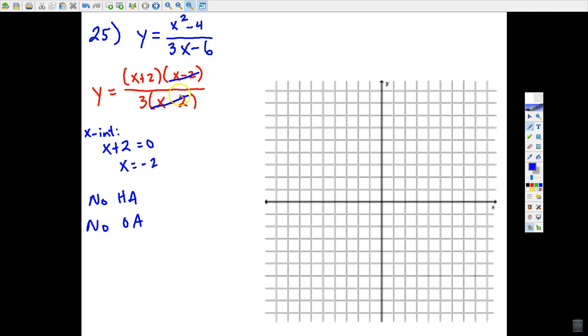We do, however, have a hole in our graph because 2 not only makes the denominator 0, but it also makes the numerator 0. And another way of identifying a hole is if you can cancel factors, then just think about the number that would plug in to make that become 0. So we're going to have a hole in our graph at x equals 2.